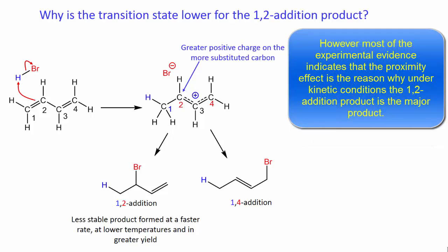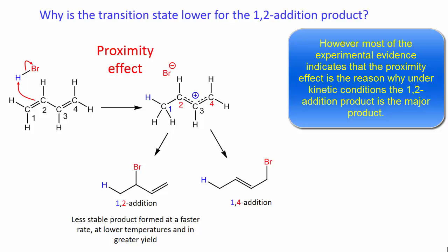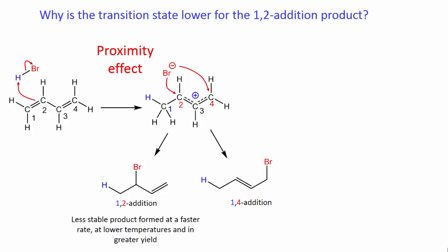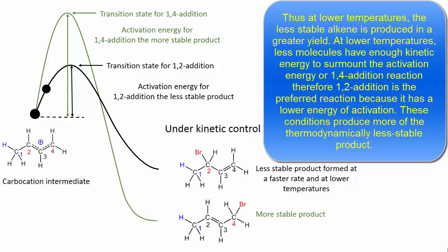However, most of the experimental evidence indicates that the proximity effect is the reason why, under kinetic conditions, the 1,2-addition product is the major product. After initial protonation, the bromide ion is closer to carbon 2, and because of its close proximity to carbon 2, it will react faster at carbon 2 than at carbon 4, and will produce the 1,2-addition product in greater yield. Thus, at lower temperatures, the less stable alkene is produced in greater yield.